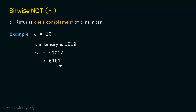Now we need to identify the decimal equivalent of 0101. The positional weight of the rightmost 1 is 2^0, and the positional weight of the other 1 is 2^2. So 2^2 = 4 and 2^0 = 1, giving us 4 + 1 = 5. So it appears NOT of A equals 5.